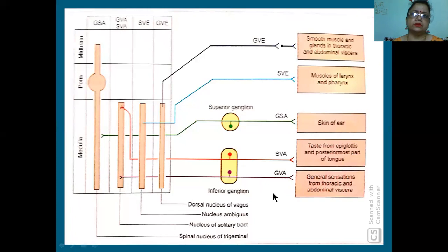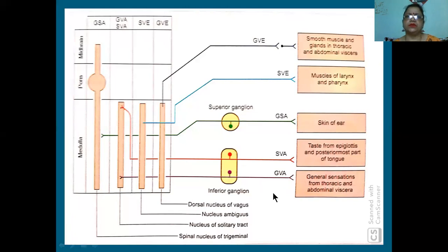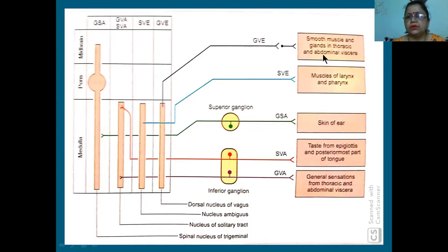You have already learned that the larynx is supplied by the vagus - the superior laryngeal dividing into external laryngeal and internal laryngeal, then recurrent laryngeal. These are the functional components of the vagus nerve.